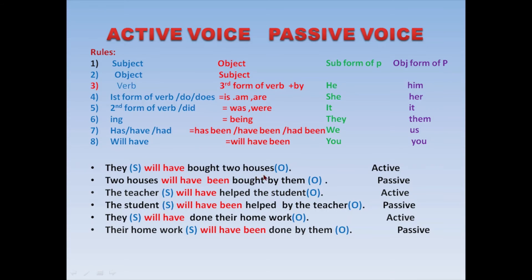Example: 'They will have bought two houses.' 'Will have' is present — change it to 'will have been'. Subject is 'they', object is 'two houses'. Bring 'two houses' forward as subject. 'Will have' becomes 'will have been'. Third form of verb 'bought', add 'by'. 'They' subject becomes 'them'. Result: 'Two houses will have been bought by them.' Next: 'The teacher will have helped the student.' Teacher is subject, student is object. 'Will have' becomes 'will have been': 'The student will have been helped by the teacher.'